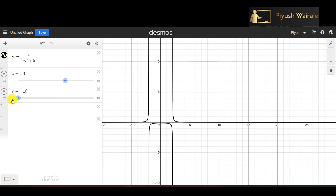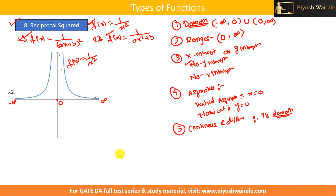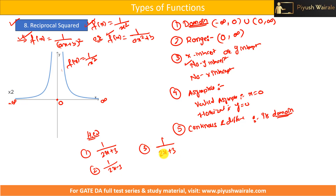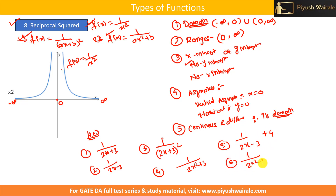I hope you understand this concept. Go to Desmos and try out some examples: (1) 1/(2x + 3), (2) 1/(2x - 3), (3) 1/(2x + 3)², (4) 1/(2x² + 3), (5) 1/(2x - 3) + 4, and (6) 1/(2x² - 3) + 4. See the nature of the graph for all six functions.